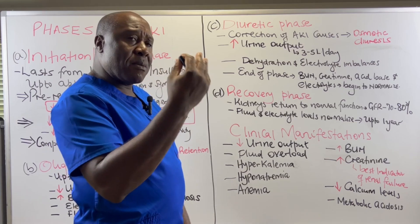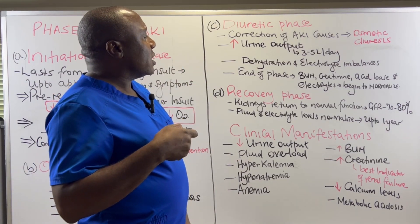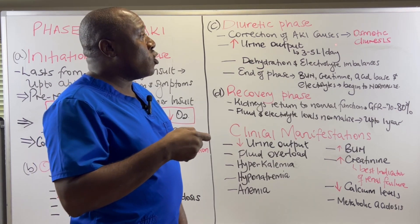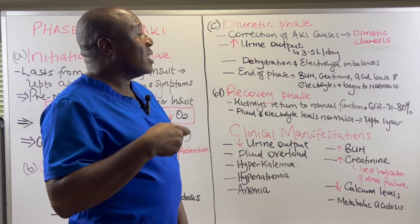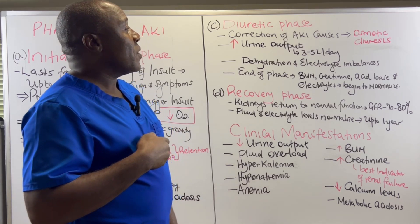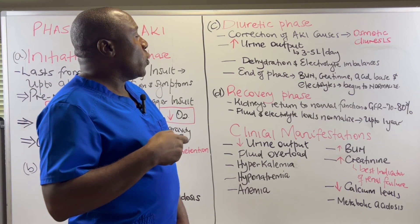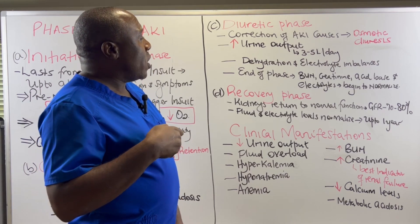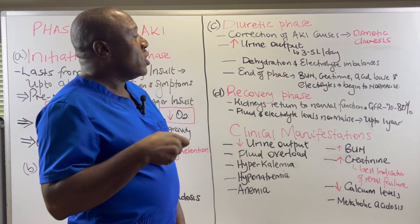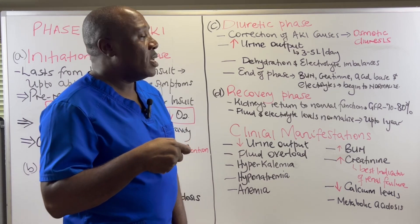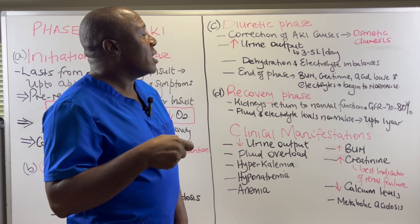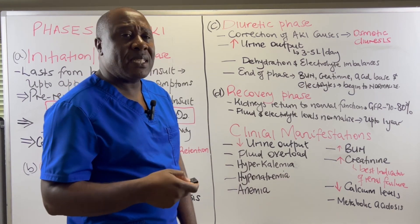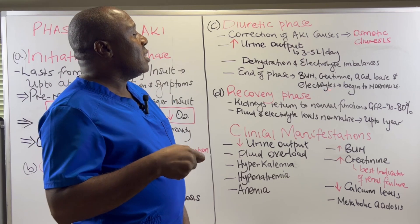Our kidneys have started coming back to normal functioning. During this diuretic phase, patients could experience dehydration because they are losing a lot of water through osmotic diuresis. We also see electrolyte imbalances. Towards the end of the diuretic phase, we begin to see a normalization in the values of BUN, creatinine, acid-base balance, and electrolytes — we begin to see normalized levels of these elements in the bloodstream because our kidneys have come back to normal function.